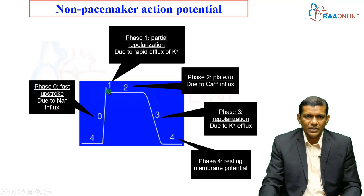After Phase 1, the graph becomes dome-shaped, representing the plateau phase of the action potential.